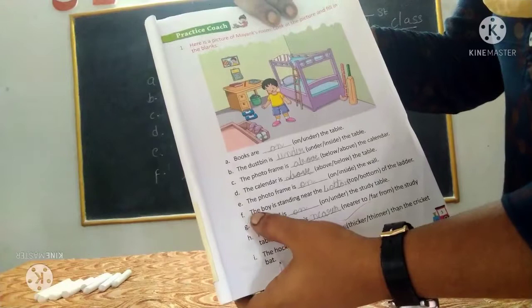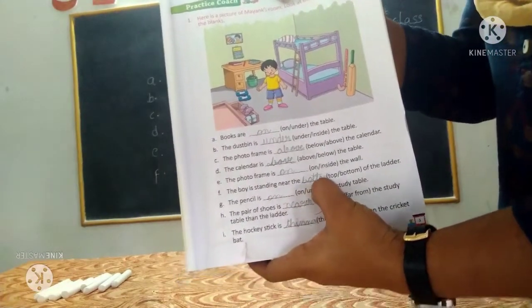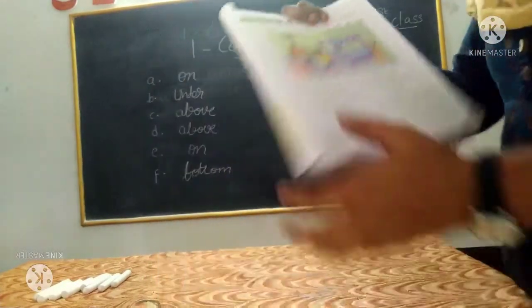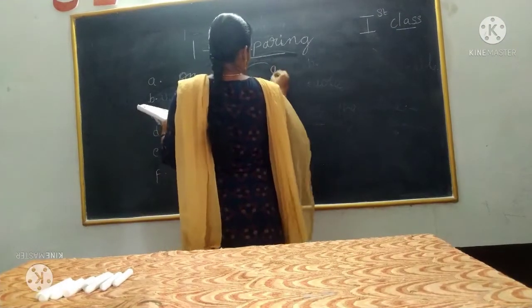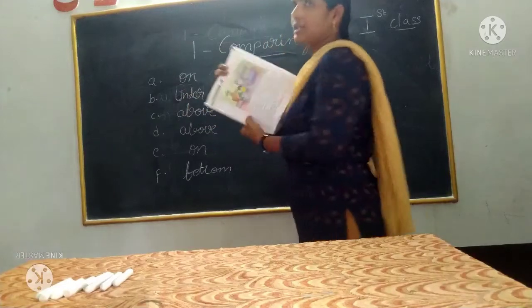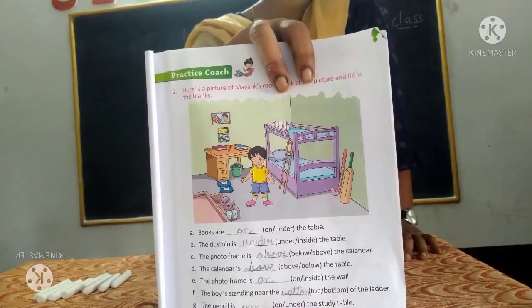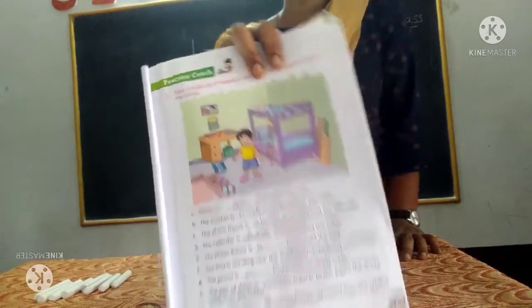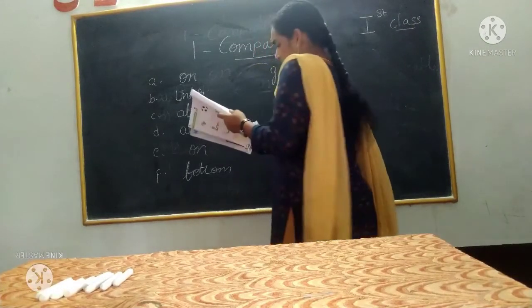So answer F is bottom. Next G: the pencil is — dash — the study table. The pencil is on the study table. Fill in the blanks: on the study table.